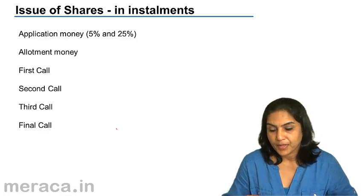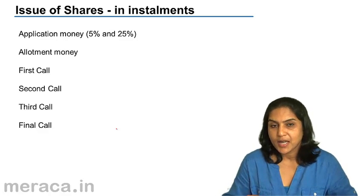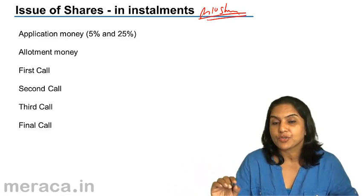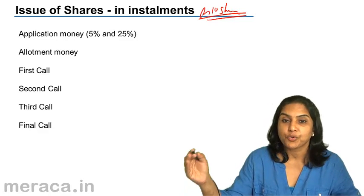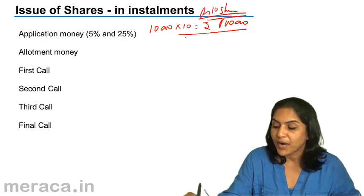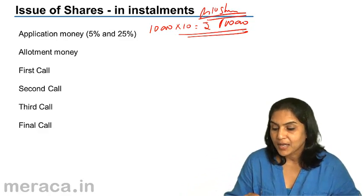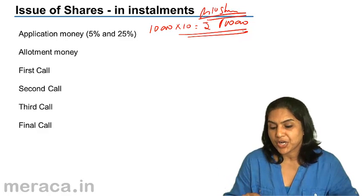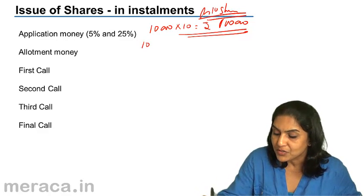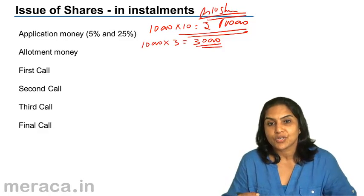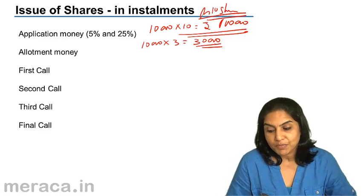Suppose I am a prospective investor and a company issues a ₹10 share. I am interested in subscribing to 10,000 shares. If I had to pay up the entire money, I am talking of 10,000 into ₹10, that is ₹1 lakh. But usually the company says that money can be paid in installments — only ₹3 per share has to be paid now, meaning I need to pay only ₹30,000, and the remaining ₹70,000 can be paid as and when the next installments become due.